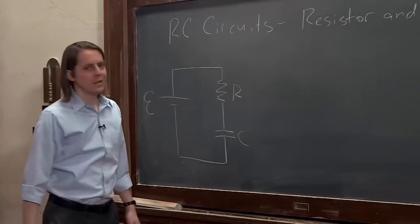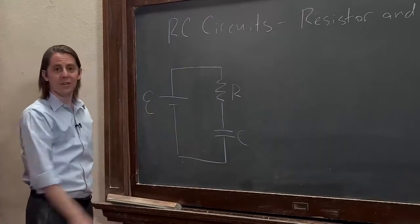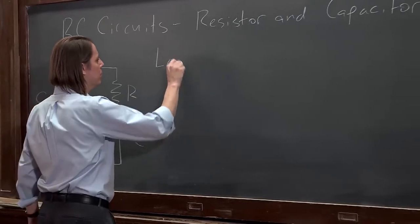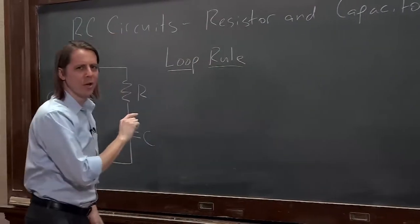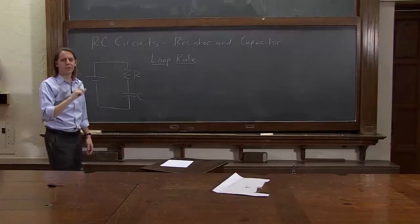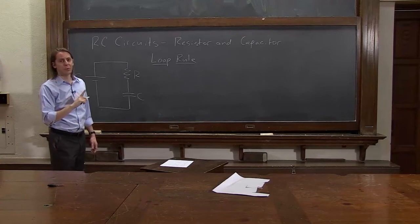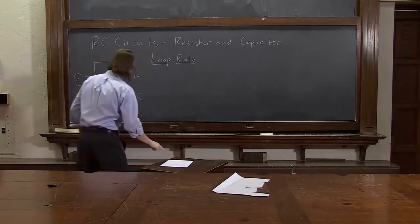So let's apply Kirchhoff's rules to this thing. Well, there's no junctions in it, so we're just going to apply the loop rule. By the way, Kirchhoff, I have a conspiracy theory about Kirchhoff. I'm pretty sure Kirchhoff and Walt Whitman were the same person. So look into it. We're going to apply the loop rule.